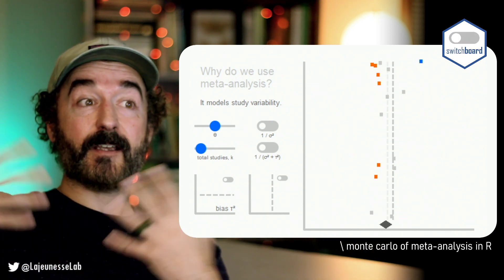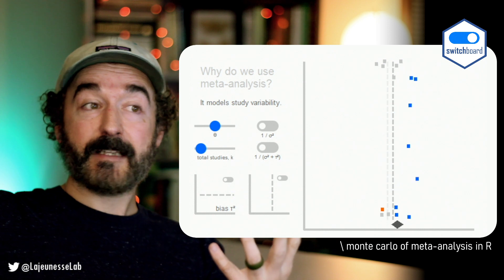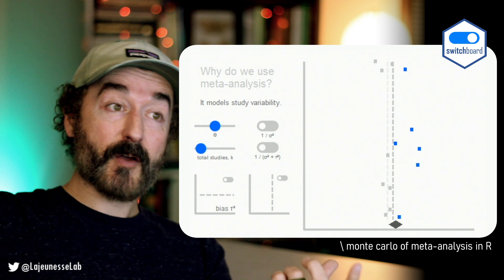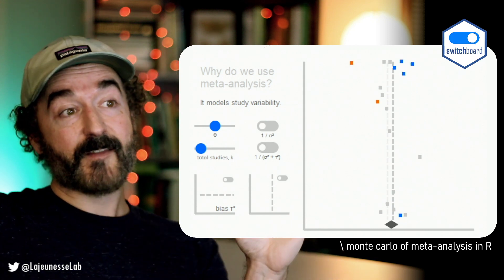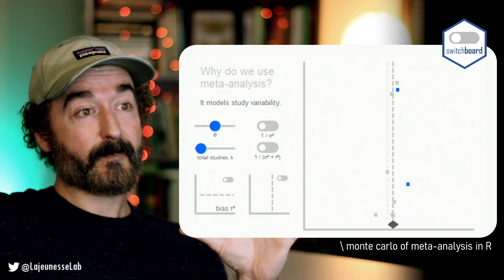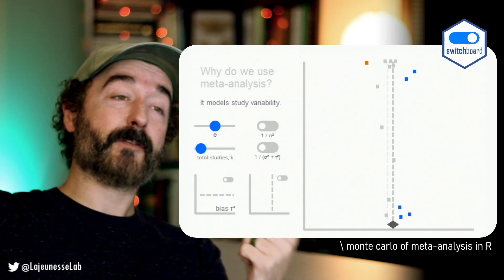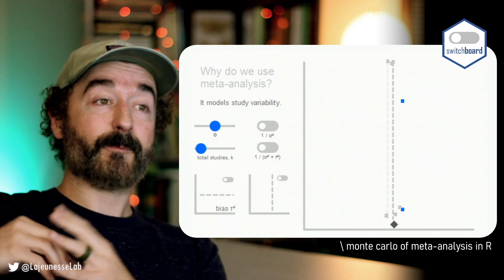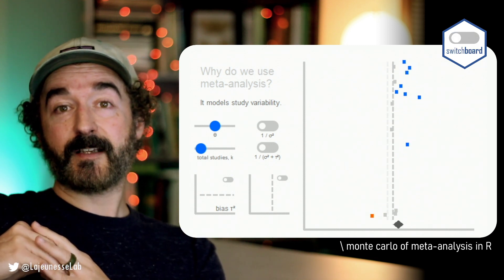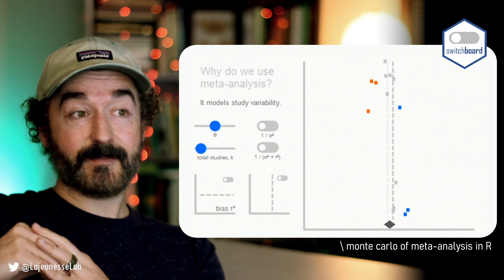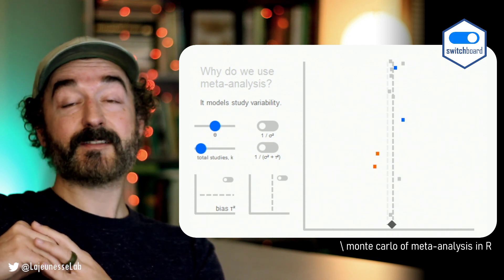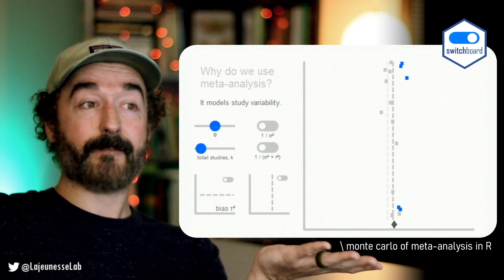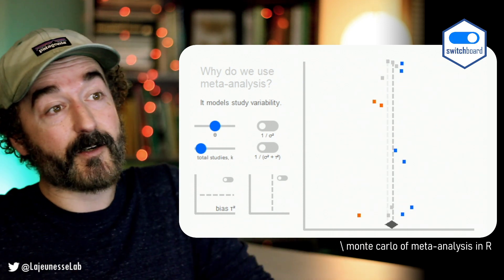That's the fun stuff in meta-analysis and research synthesis, because with that variability we can model and improve inferences at the synthesis level. So just to reiterate: the first thing that meta-analysis does that makes it special is that we don't quantify studies using significance. We quantify studies using effect sizes. The benefit of that is that effect sizes expose the variability across studies.